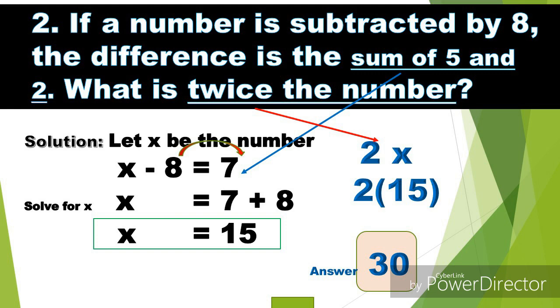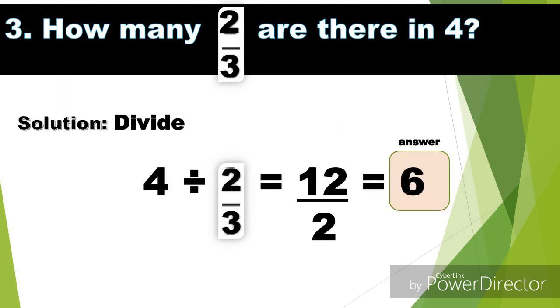Therefore our equation is x minus 8 equals 7. The next step is to solve for x. I'm going to transpose negative 8 to the other side, so negative 8 becomes positive 8. And now we have x equals 7 plus 8 is 15. So therefore the number is 15. The question is what is twice the number. When we say twice, it is 2 times the number x. Nakuha na natin yung value ng x which is 15, so we're going to substitute: 2 times 15 equals 30. Therefore the answer is 30.